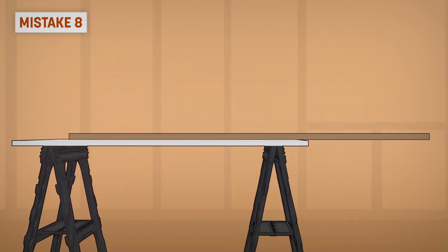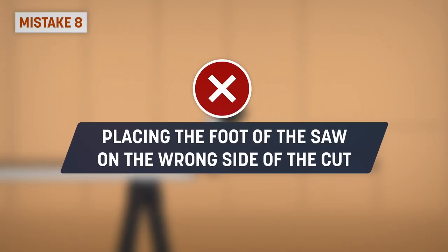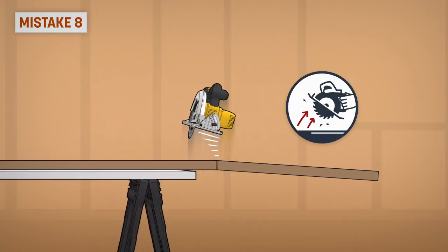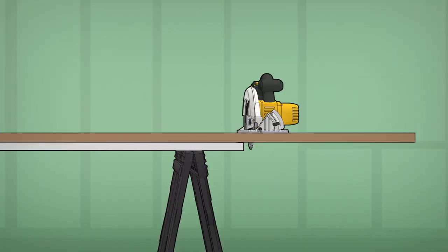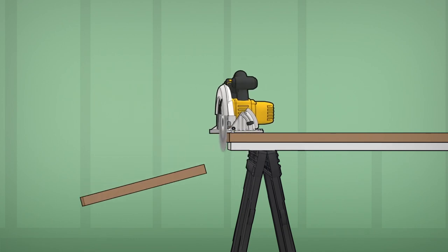Mistake 8: Placing the foot of the saw on the wrong side of the cut. To avoid blade binding and kickback, the foot of the saw should always be firmly supported by the workpiece, not placed on the section that will fall off after the cut.